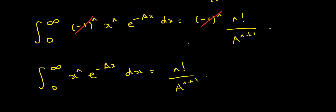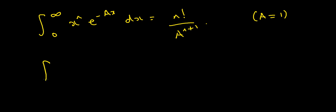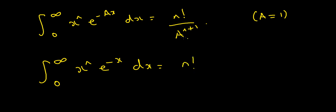We're nearly there. All I need to do now is set a equal to 1. On the left I have the integral from 0 to infinity of x to the power n, e to the minus x dx. On the right, the denominator is 1 to the power n plus 1, which is just 1, so dividing by 1 changes nothing. This gives us the result we wanted to prove: n factorial equals the integral from 0 to infinity of x to the power n, e to the minus x dx. This is Euler's integral of the second kind, and it's also the usual way the gamma function is defined.